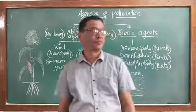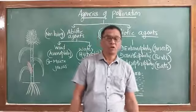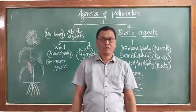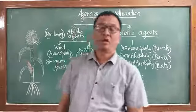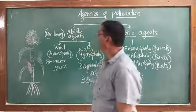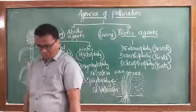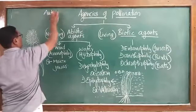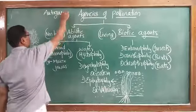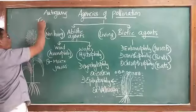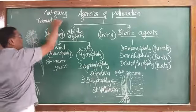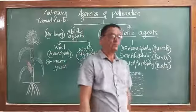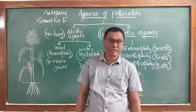According to our textbook, we have to study one of the contrivances of pollination for autogamy. In autogamy, a common example is Commelina benghalensis. This plant produces two different kinds of flowers.